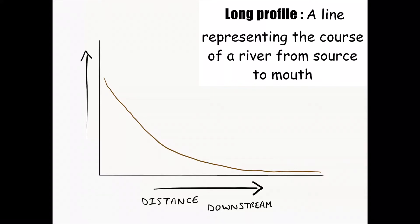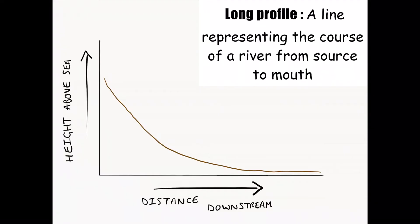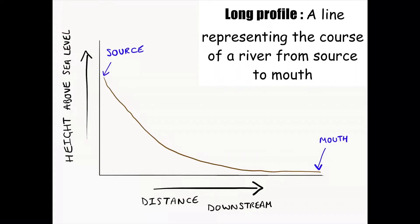If we look at creating a quick diagram of the long profile of a river, you'll notice on my x-axis I've got distance downstream and on my y-axis I've got height above sea level. If I draw on the source and the mouth — the source is your start and the mouth is the end — we notice that the course of the river from source to mouth decreases in height above sea level.